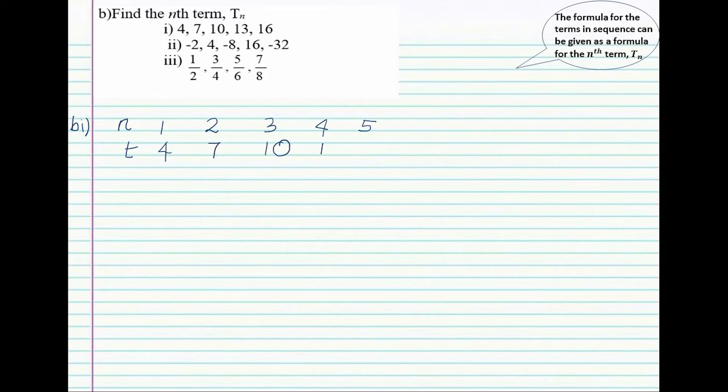Fourth term is 13, sixth term is 16. Then we are interested in seeing what the difference is between each term. We can see that from 4 to 7, when we add 3 onto 4 we will get 7. Similarly, adding 3 onto 7 we get 10. Continue with 10 plus 3 we get 13, and then the last one, 13 plus 3 we get 16.